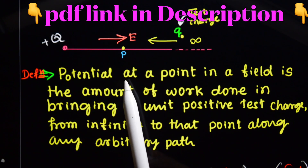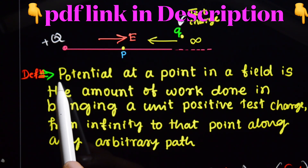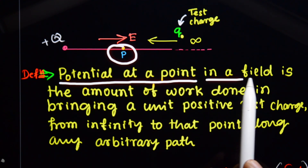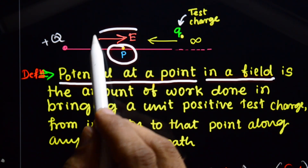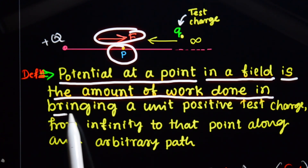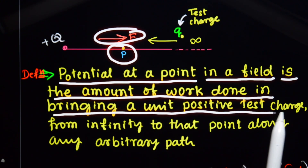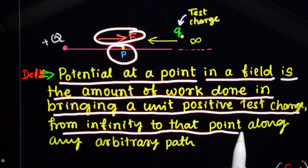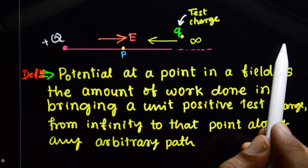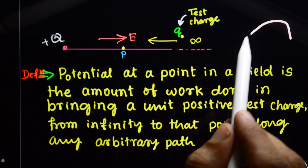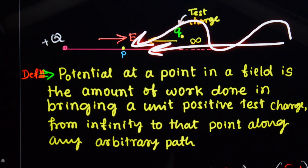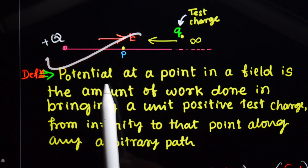Electric potential at a point in a field is the amount of work done in bringing a unit positive test charge from infinity to that point along any arbitrary path. It does not matter which path — straight or curved — you bring the charge. That is the definition of electric potential.